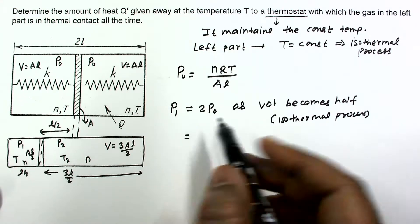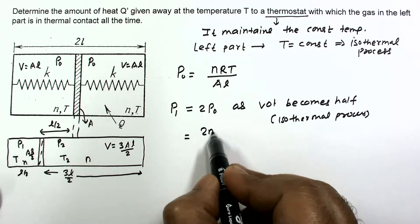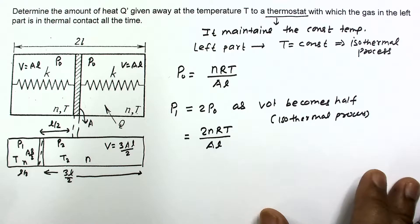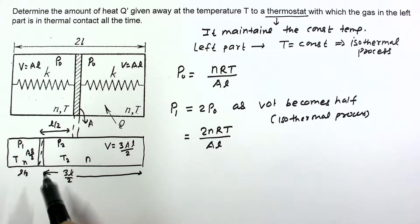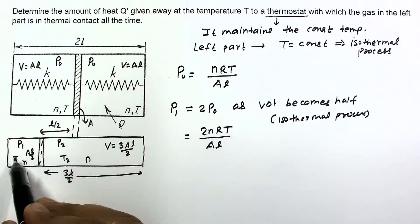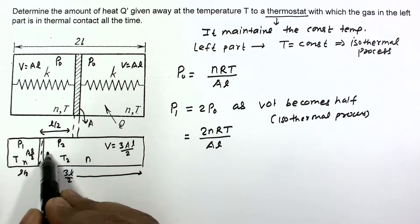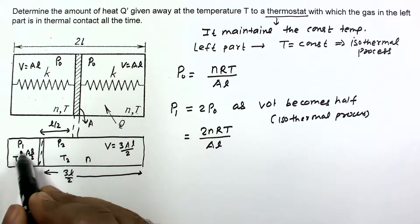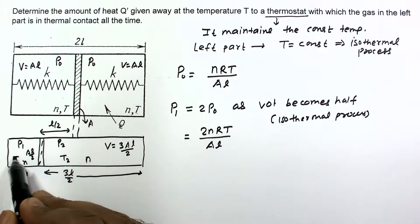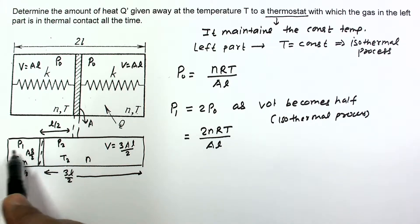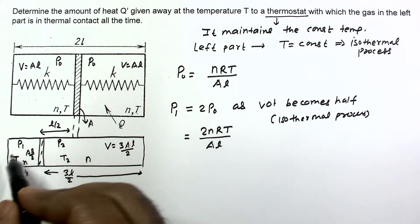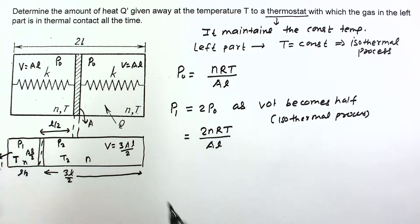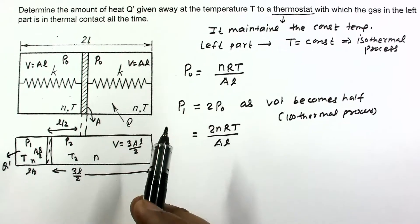So P1 equals 2P0, and substituting P0, we get P1 equals 2nRT divided by AL. Ultimately we have to find the heat Q dash given away by the left section to the thermostat. Since the piston compresses the left gas, its temperature would tend to increase, so the gas must give away heat to maintain constant temperature. Let the heat given away be Q dash.